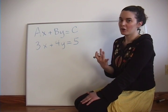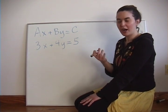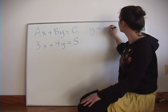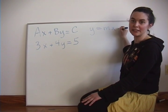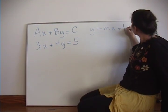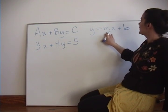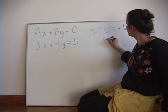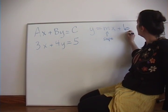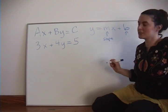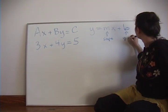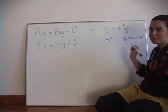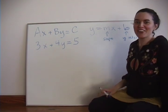So slope-intercept form is always going to look like y = mx + b. So this is the slope, M, and B is always going to represent the y-intercept. Okay, so let's go.